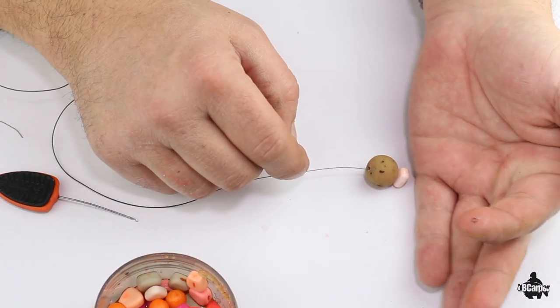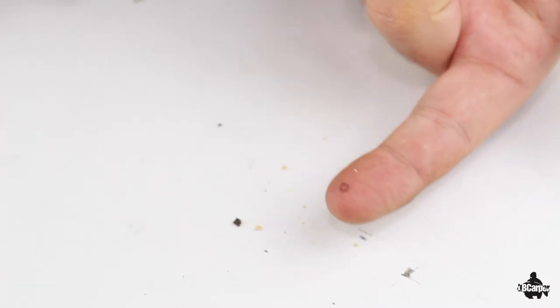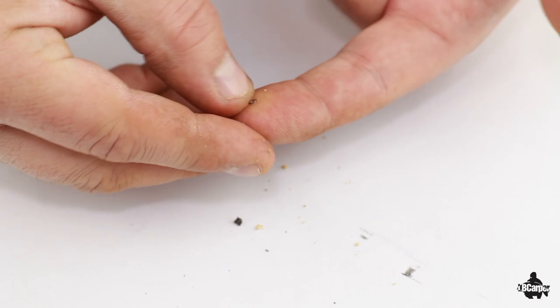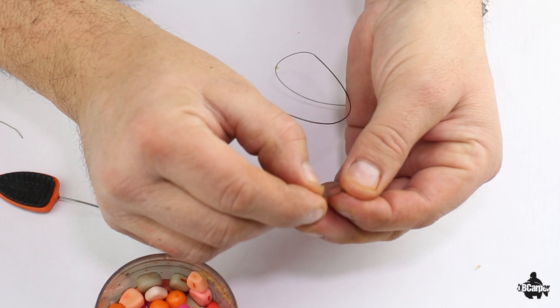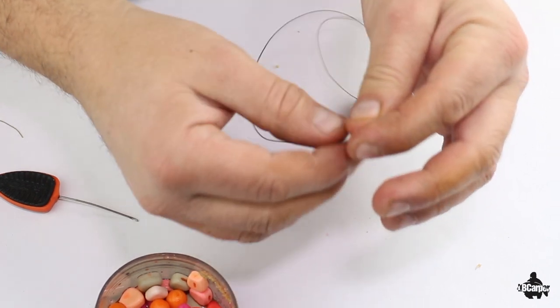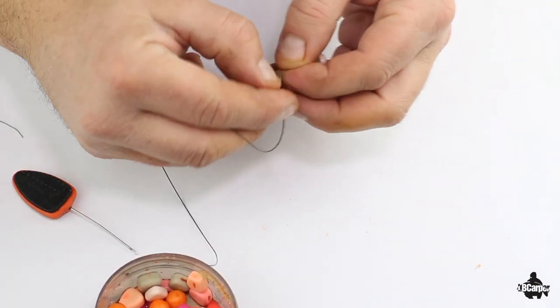Next thing you want is a mini ring. Now thread that on, smallest ring you can get. Thread him on like that all the way down to a simple overhead knot.